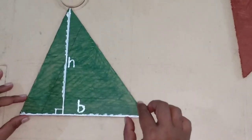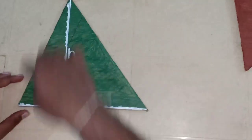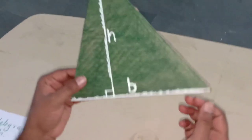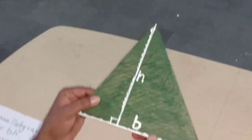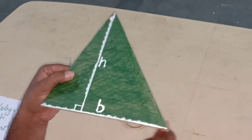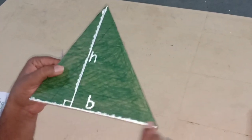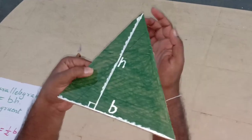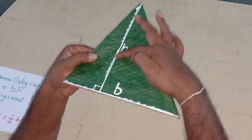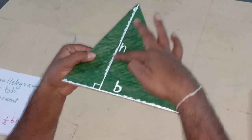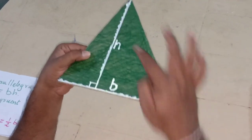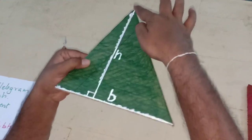Today we are going to find the area of this triangle. In these three sides, we can take any side of the triangle as the base. Here I took this side as the base. To this side, this is the opposite vertex. From the opposite vertex, I have drawn a perpendicular — this is the perpendicular line segment drawn from the vertex to this opposite side.